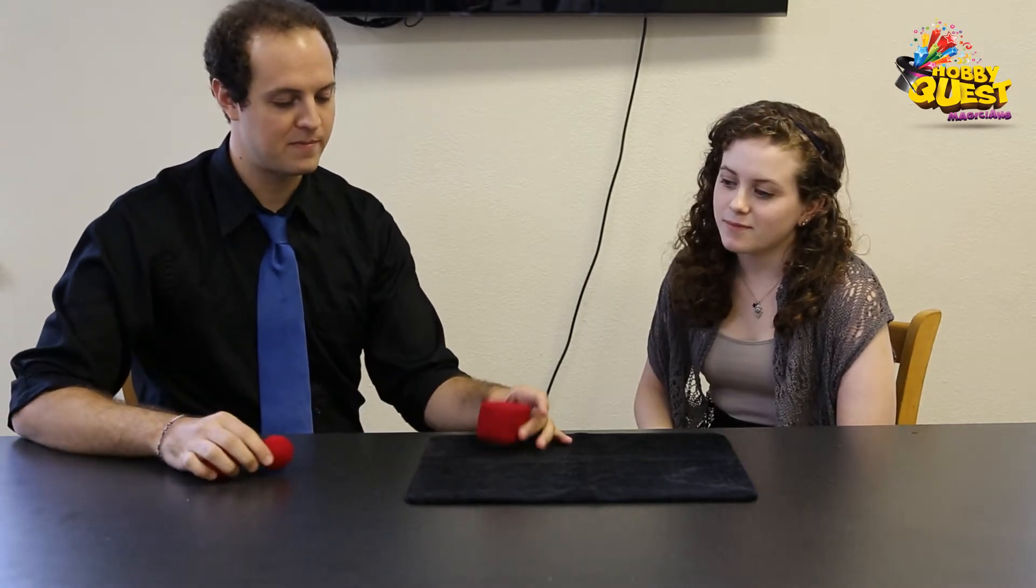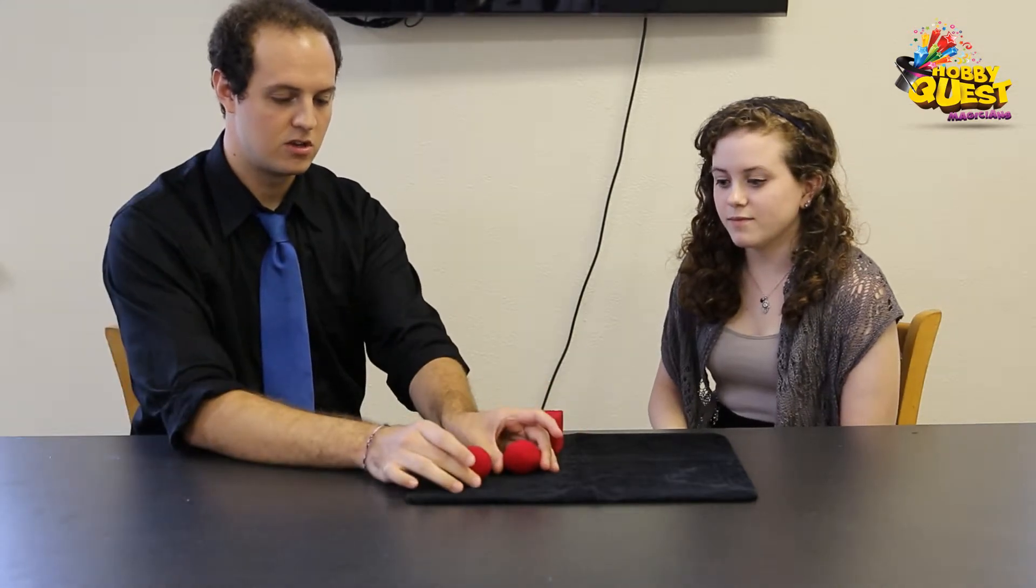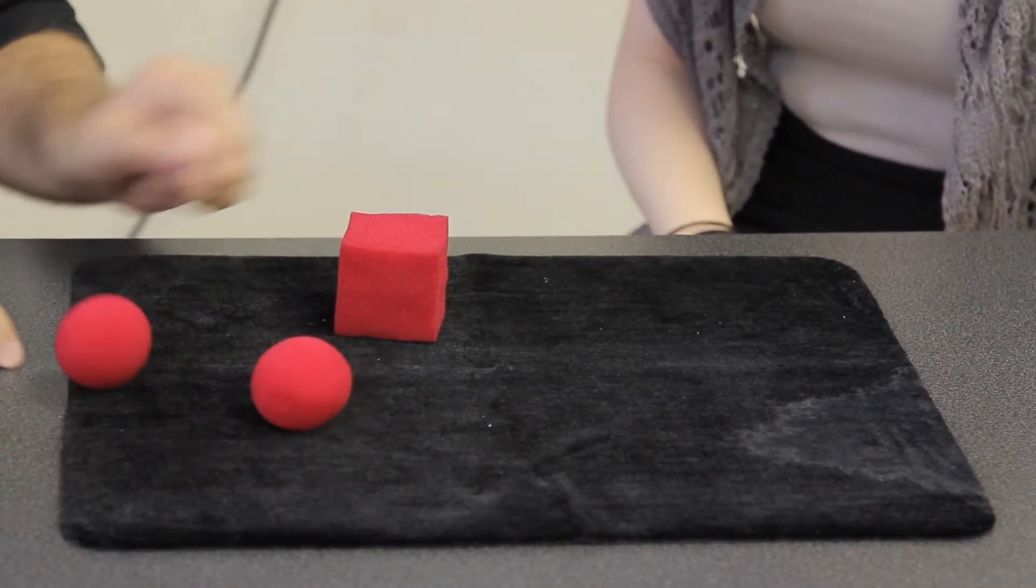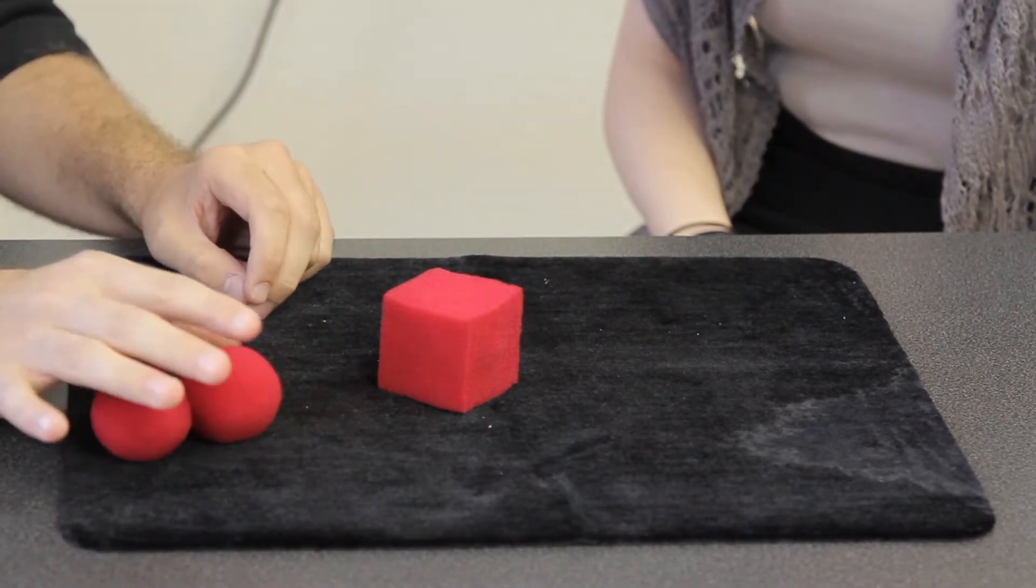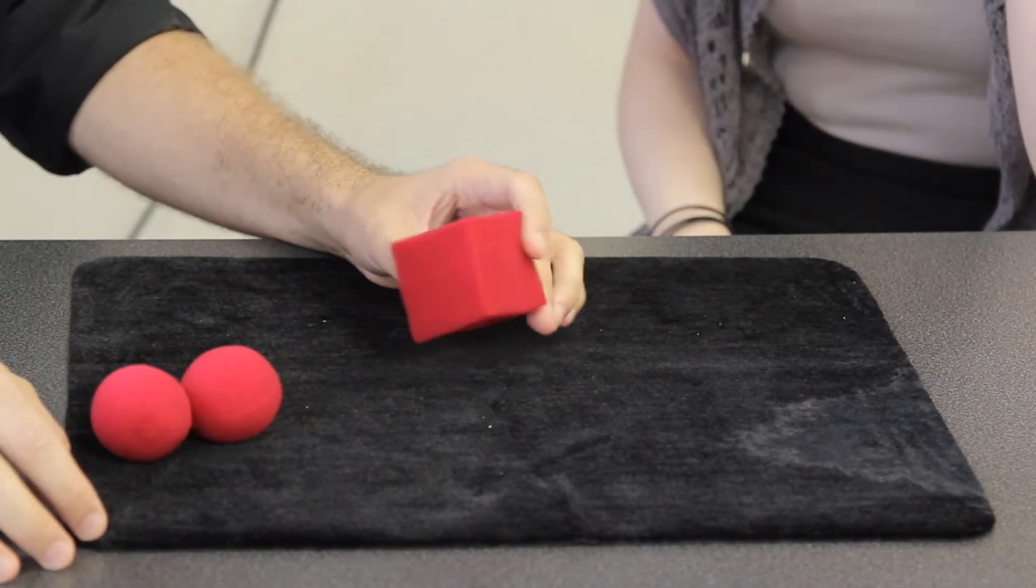Now for the explanation of sponge balls. What we have is two round sponge balls and one square sponge ball. We're going to start with how to set up the square sponge ball.